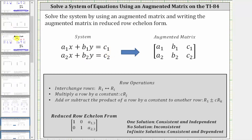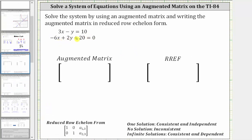So going back to our example, notice how the second equation is not in standard form. For the equation to be in standard form, we need to subtract 20 on both sides of the equation. If we subtract 20 on both sides, we have the equation negative 6x plus 2y equals negative 20.